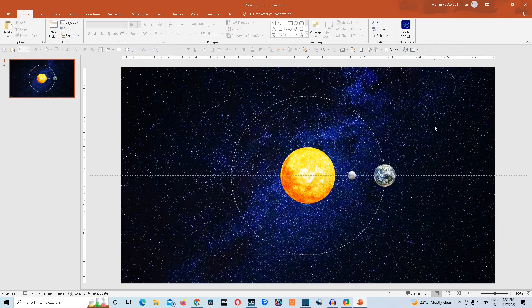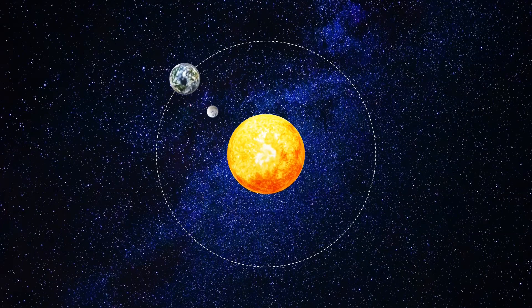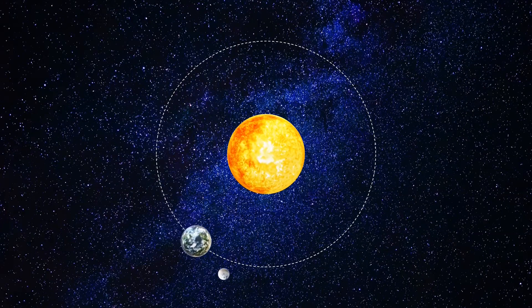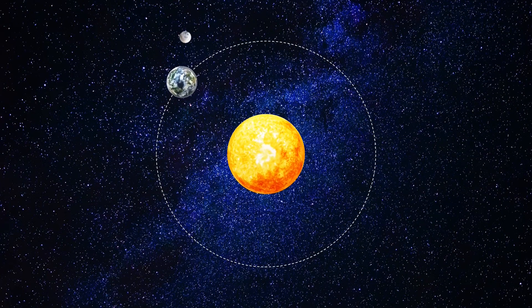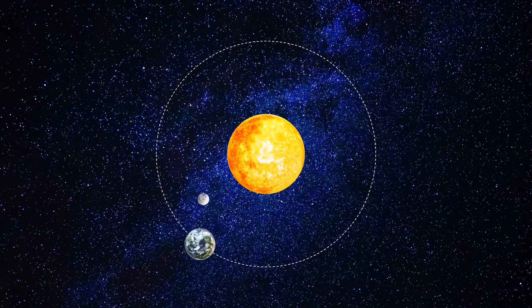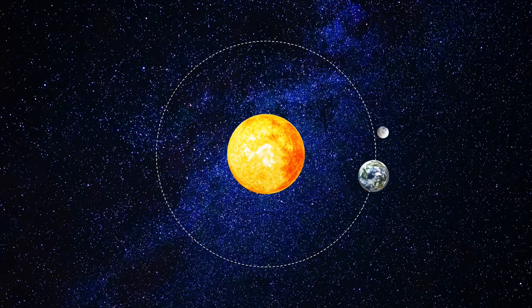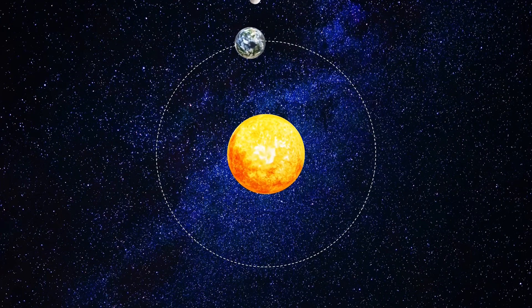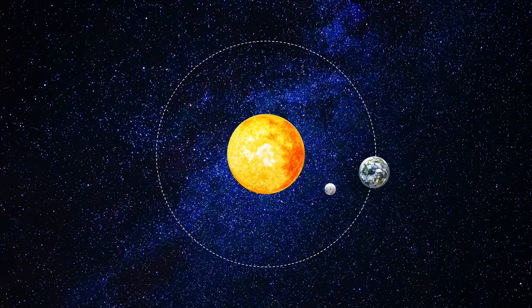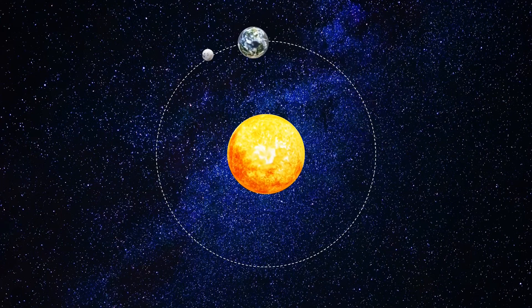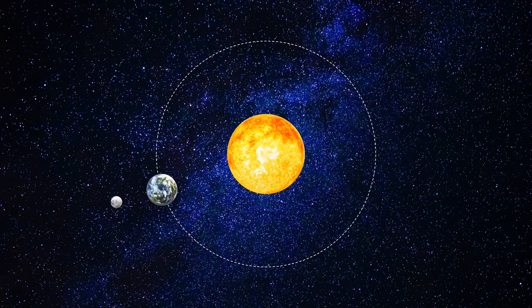Now that all the animations have already been applied to the 3D models and the orbits, let's see how it's looking in the slideshow. It's looking extremely beautiful. So this is how you create the cluster of both solar and lunar system in PowerPoint. If you know how to use the tools available in PowerPoint, you can design your imagination — whatever you imagine, you can bring that to life and showcase this in your presentations.